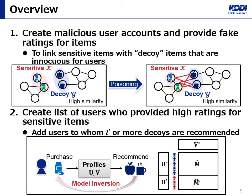Let's move on to talking about our proposed method. The goal of our attack is to link sensitive items with some adversarially chosen decoy items. The sensitive items are things like adult movies and medical items. The decoy items should be seemingly innocuous for users, such as non-erotic novels and commodities. One way to do so is to randomly choose decoy items from the set of non-sensitive items. As with the attack of Lee et al., the adversary performs data poisoning by creating malicious user accounts and providing ratings for items. However, the malicious rating matrix should be designed so that sensitive items will be linked with decoy items.